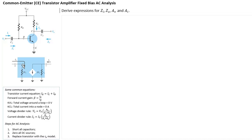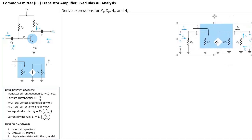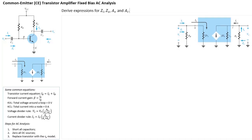Once we do all three steps, we get a circuit like the one on the right. C1 and C2 become shorts so they're not there anymore. The top part of RB and RC becomes ground. RC has the top part connected to the collector and the bottom connected to ground. The transistor is replaced by the RE model.